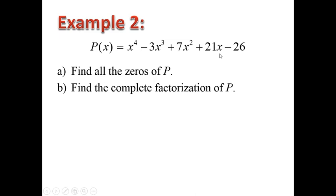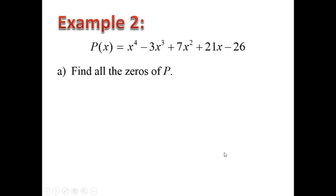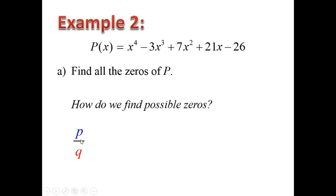A lot of people might wonder, can we factor this by grouping? If you try to group x to the power 4, 7x squared, and negative 26, nothing is factorable from there. So we need to use P over Q, which is called the rational zero theorem. The first thing we want to find is all the possible factors of P over Q. P is all the possible factors of the constant term, which is negative 26. Q is the possible factors of the leading coefficient, which is plus or minus 1.